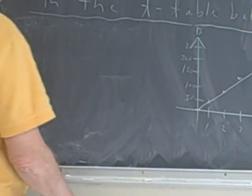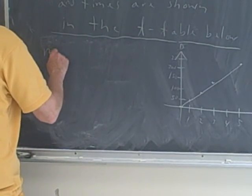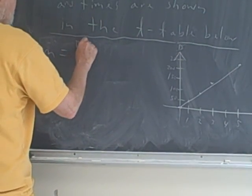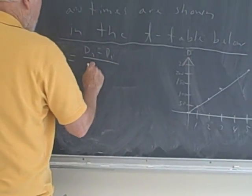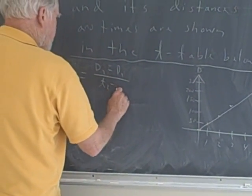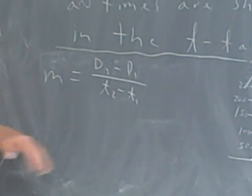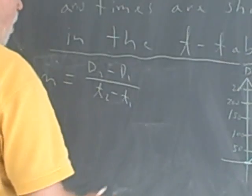So our slope is going to equal distance 2 minus distance 1 over t2 minus t1. Where this used to be y, this used to be x, but we've changed the letters there.